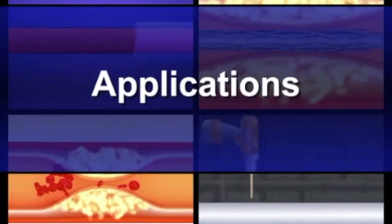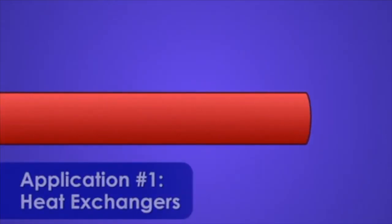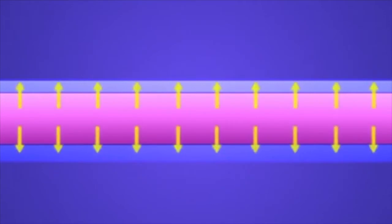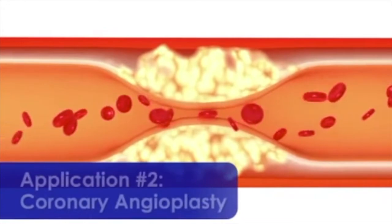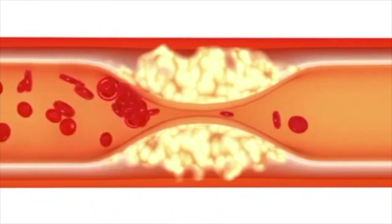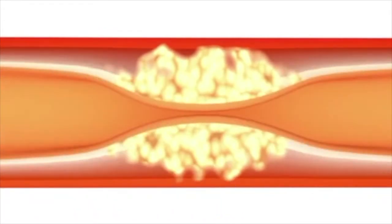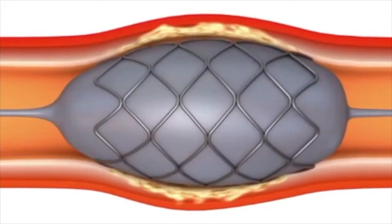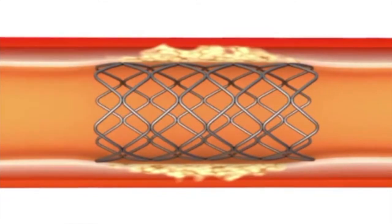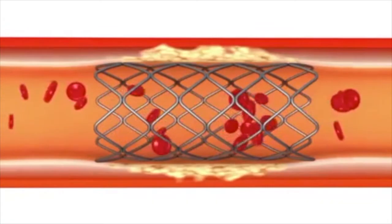Now that you are more familiar with pipe networks and pressure losses, let's look at some real-world applications. Heat exchangers typically consist of two separate piping networks bringing a hot and cold fluid in close thermal contact without mixing. Pressure drop analyses must be performed when designing heat exchangers to ensure pumps can provide sufficient flow rates. Plaque buildup in arteries reduces the effective diameter for blood flow, causing the heart to work harder; in extreme cases it can lead to total blockage or heart failure. During an angioplasty procedure, a stent is inserted to re-expand the artery and restore normal blood flow.